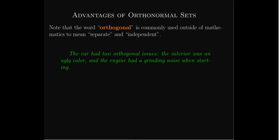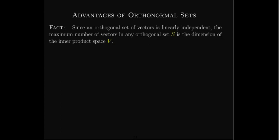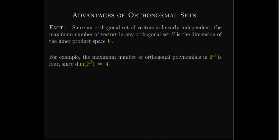You may hear the word 'orthogonal' outside of mathematics, and it has a connected meaning — it usually means very separate or very independent. For example: 'The car had two orthogonal issues: the interior was an ugly color, and the engine had a grinding noise when starting.' Those are two very separate, orthogonal issues. Since an orthogonal set of vectors is linearly independent, the most you can have in a vector space V is the dimension of that space. For example, the maximum number of orthogonal polynomials in P3 would be four, because the dimension of P3 is four.